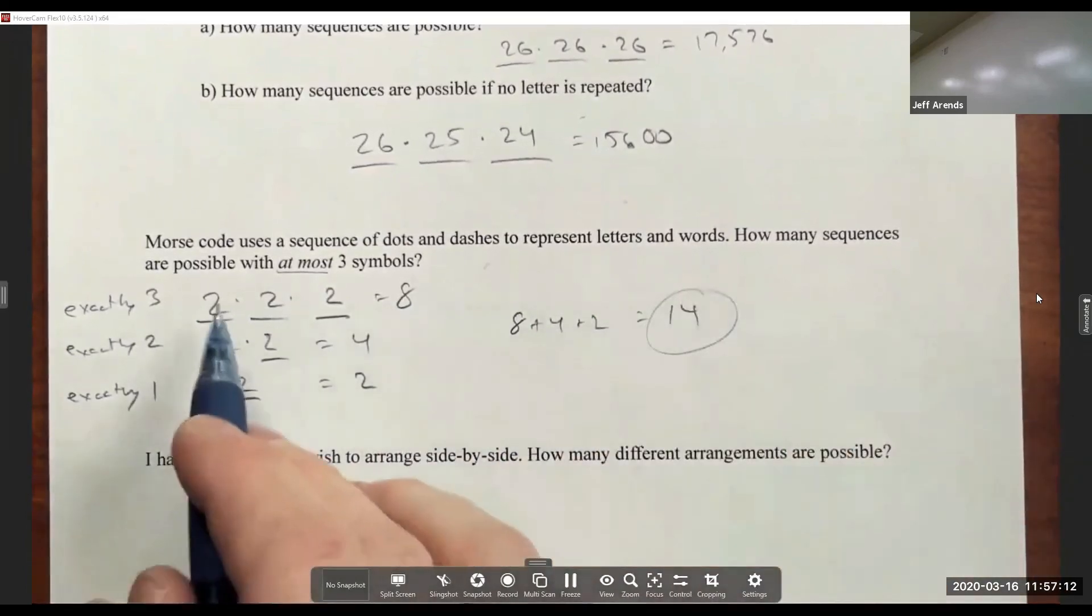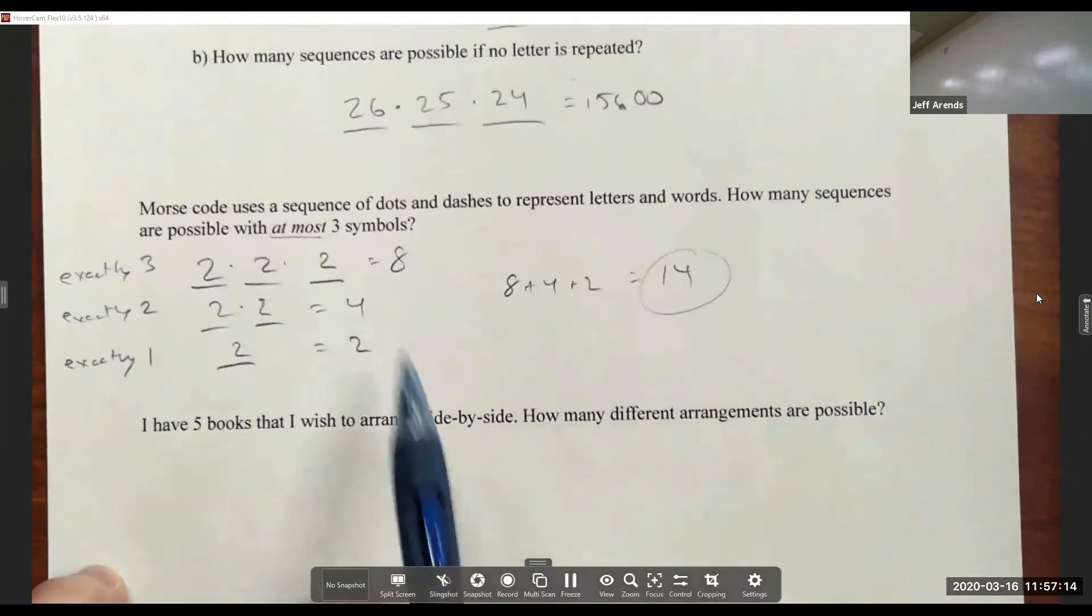So there are 14 different ways, 14 different sequences if we use at most three symbols.